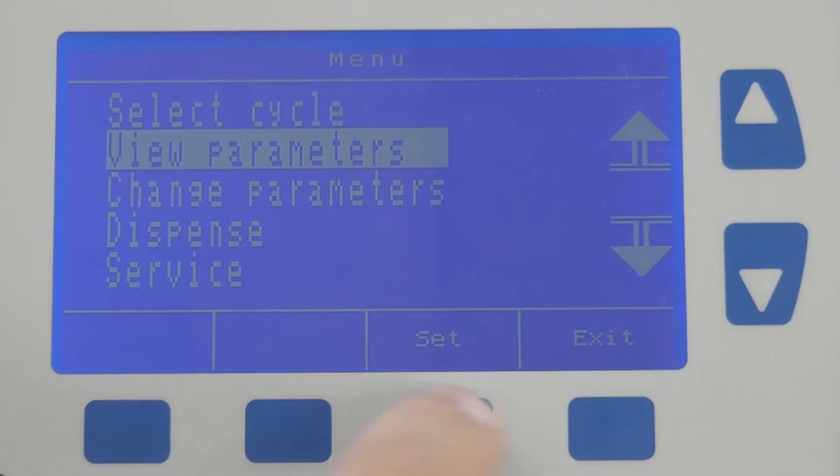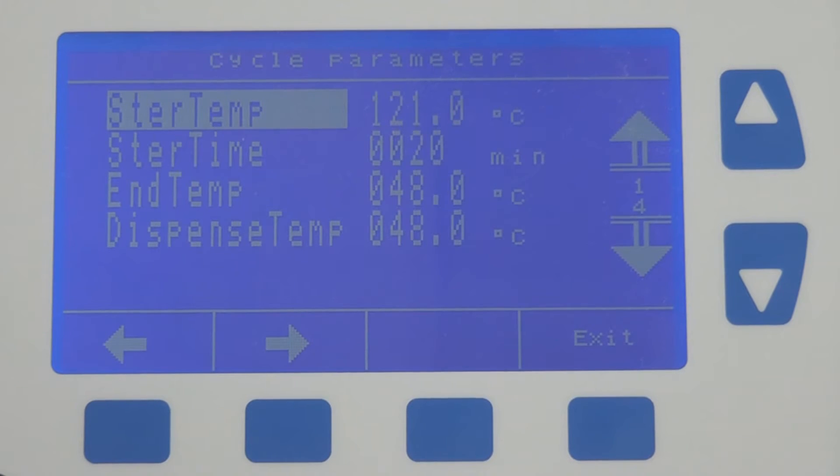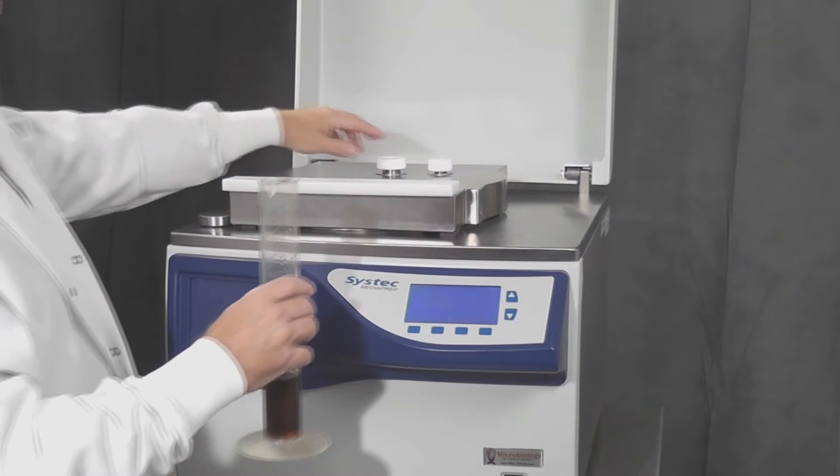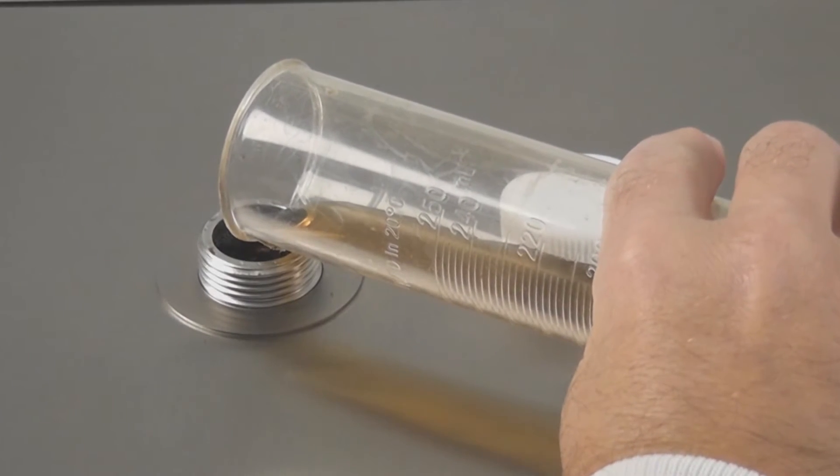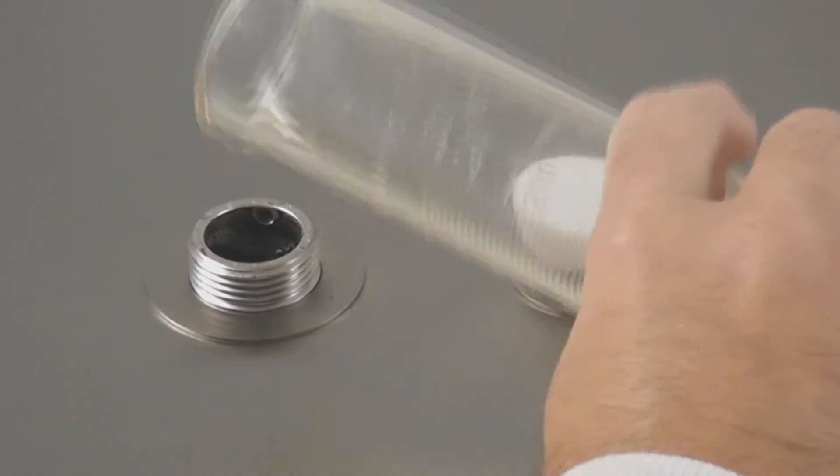To verify the settings are correct, simply hit View Parameters. If you wish to add thermolabile products or other additives after the sterilization cycle, simply remove the filling cap and pour your materials into the sterilization chamber.